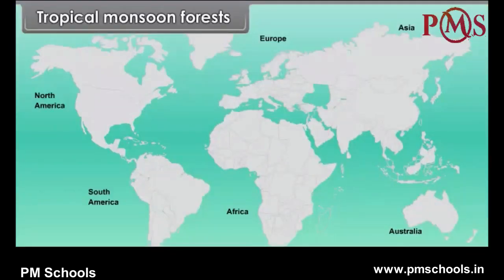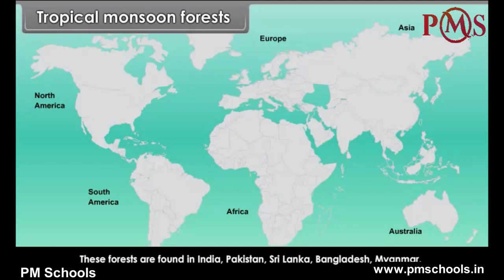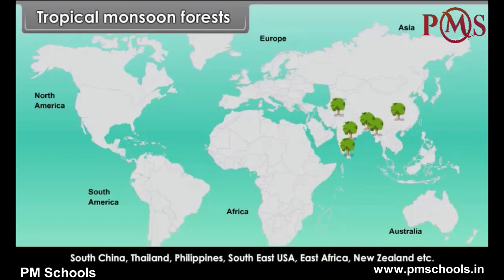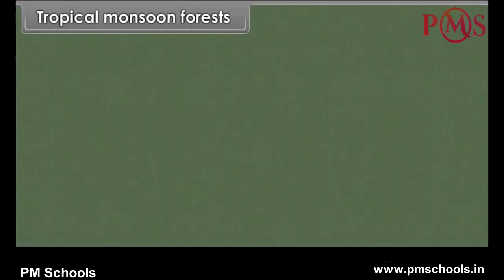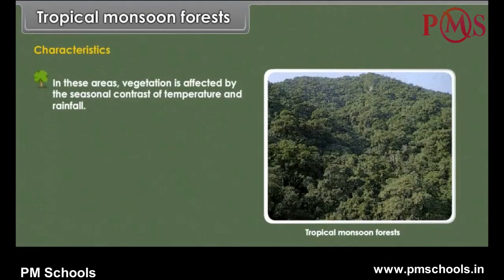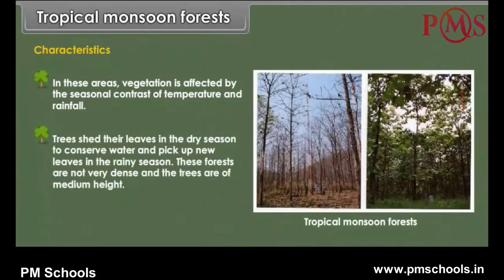Tropical Monsoon Forests. These forests are found in India, Pakistan, Sri Lanka, Bangladesh, Myanmar, South China, Thailand, the Philippines, Southeast USA, East Africa, New Zealand etc. Characteristics: In these areas, vegetation is affected by the seasonal contrast of temperature and rainfall. Trees shed their leaves in the dry season to conserve water and pick up new leaves in the rainy season. These forests are not very dense and the trees are of medium height.